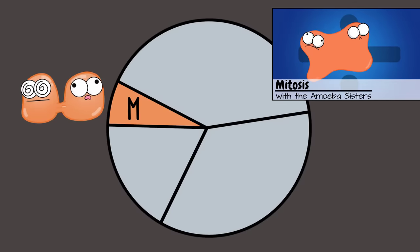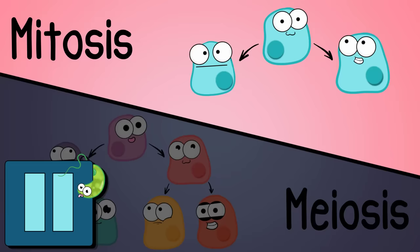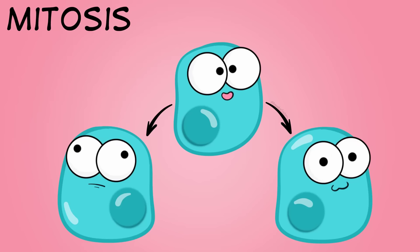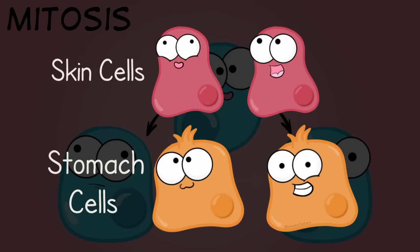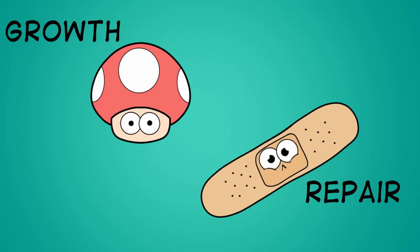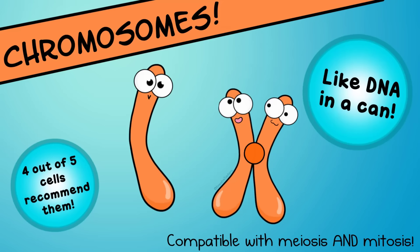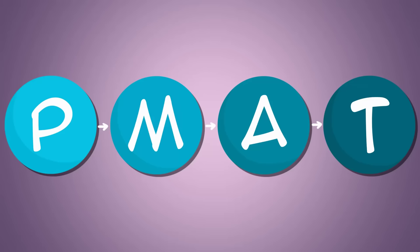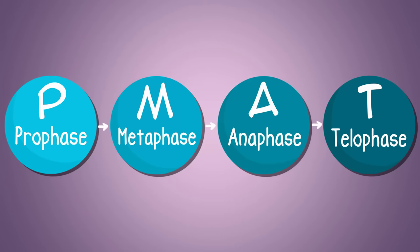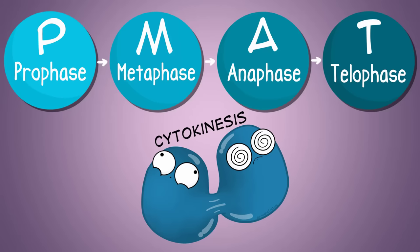The cell cycle has M phase, which includes mitosis. What is mitosis? Mitosis is part of cell division. In humans and many other organisms, it makes identical body cells—like skin cells making skin cells or stomach cells making stomach cells—great for growth of an organism or replacement of worn-out cells. During mitosis, chromosomes, which are condensed forms of DNA and protein, can be moved more easily into the newly formed daughter cell. We went over the PMAT mnemonic to remember the stages: Prophase, Metaphase, Anaphase, and Telophase. Cytokinesis splits the cytoplasm and completely divides the actual cell.